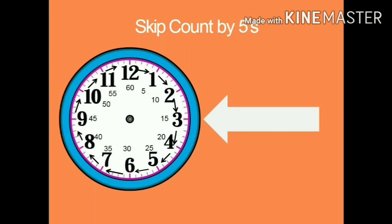Till here, it is 30 minutes. From 6 to 7 it will be 31, 32, 33, 34, 35. From 7 to 8 it will be 36, 37, 38, 39, 40. From 8 to 9 it will be 41, 42, 43, 44, 45. From 9 to 10 it will be 46, 47, 48, 49, 50. From 10 to 11 it will be 51, 52, 53, 54, 55. From 11 to 12 it will be 56, 57, 58, 59, 60. This is the whole 60 minutes.